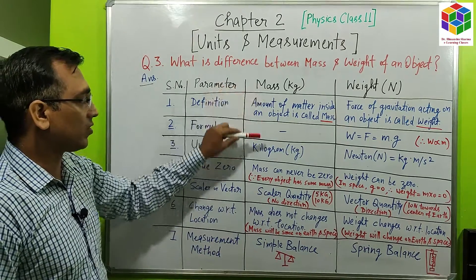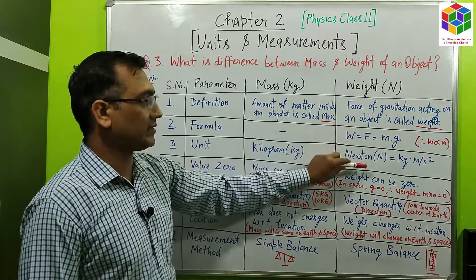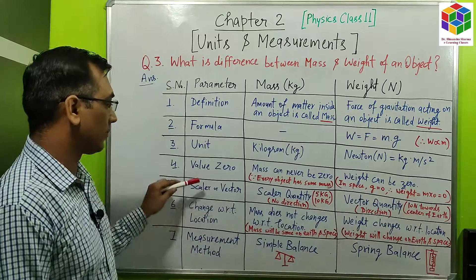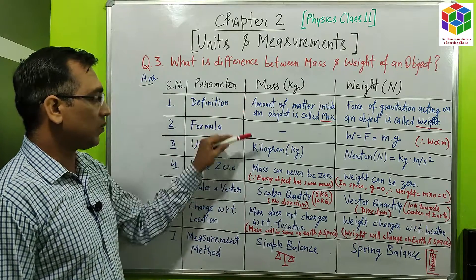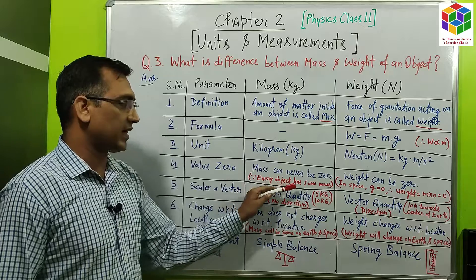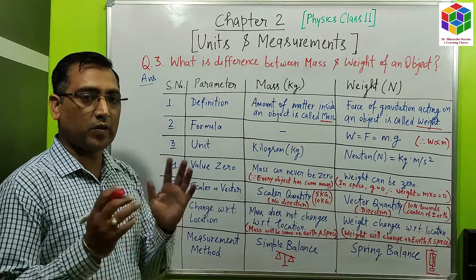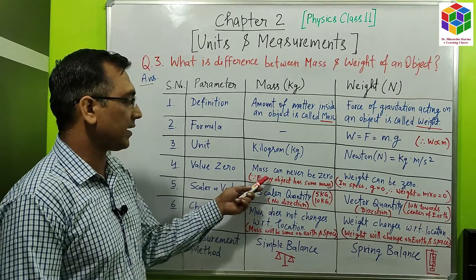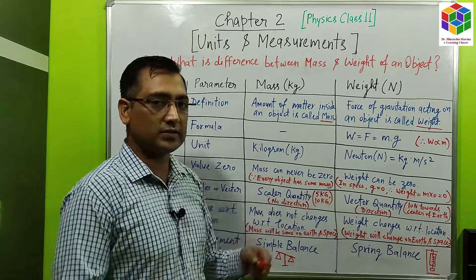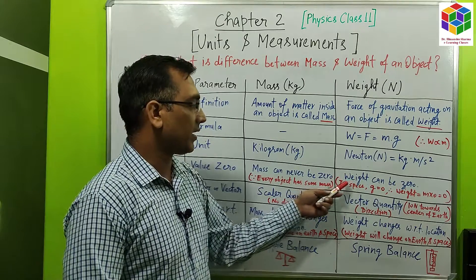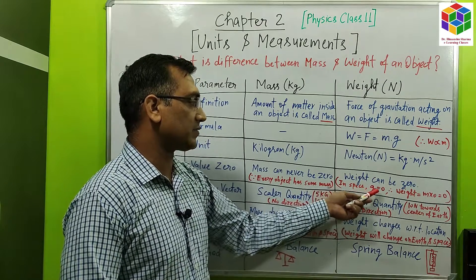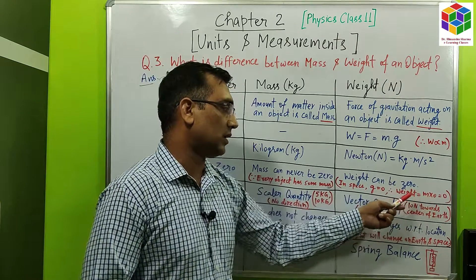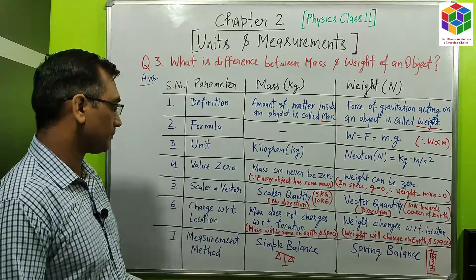Unit: the unit of mass is kilogram and the unit of weight is Newton, where Newton equals kilogram into meter per second square. Regarding zero value: mass can never be zero because every object has some matter — even an empty object has air in it, and air also has mass. But the weight can be zero — for example, in space we have gravitational force equal to zero, so according to the formula W = m × g, with g = 0, the weight can be zero in space.